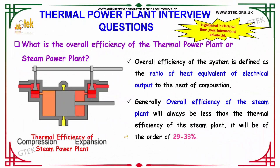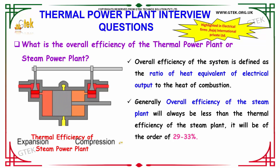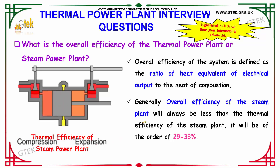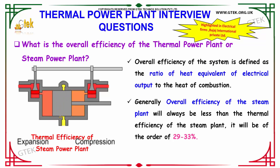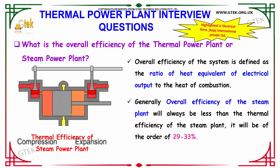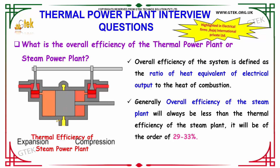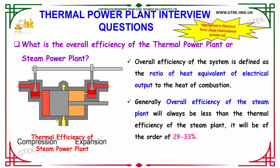What is the overall efficiency of the thermal power plant, or steam power plant? The overall efficiency of the system is defined as the ratio of heat equivalent of the electrical output to the heat of combustion. Generally, the overall efficiency of the steam power plant tends to always be less than the thermal efficiency of the steam plant, at the order of 29 to 33%.